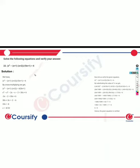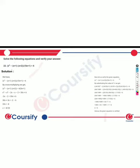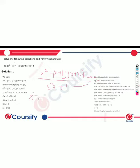The next question is: x squared minus x plus 1, upon x plus 2, upon 5x plus 1, equals 6. Cross-multiplying: 5x plus 1 multiplied by x squared minus x, giving x squared minus 2x minus 2x minus 2.